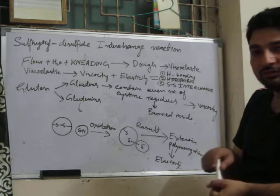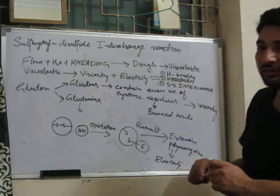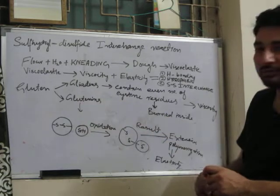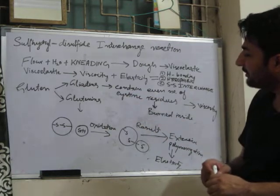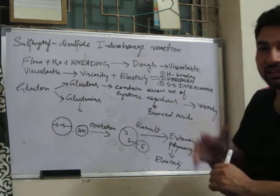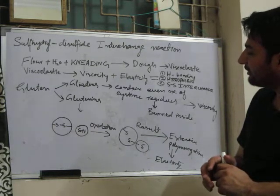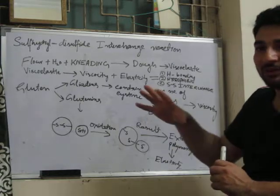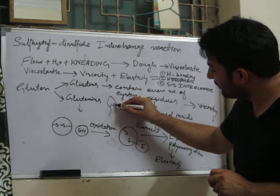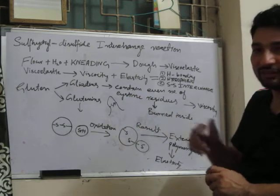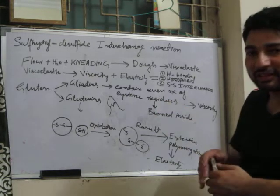In wheat flour, there is a gluten protein which is further divided into two groups: gliadins and glutenins. In gliadins, we have cysteine — sulphur-containing amino acids — present in it, and they are already in the form of disulphide linkages. They are already occupied by disulphide linkages, but they are buried inside the chain.